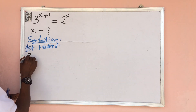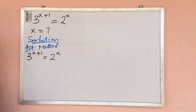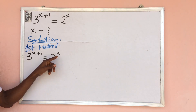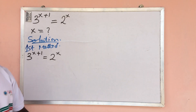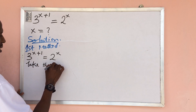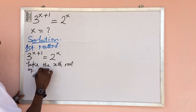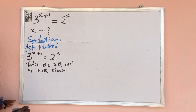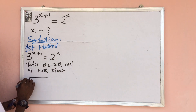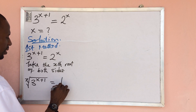For the first method, we take our question: three to the power of x plus one equals two to the power of x. What we're going to do is take the x-th root of both sides. So if we do that, this gives us the x-th root of three to the power of x plus one, equal to the x-th root of two.